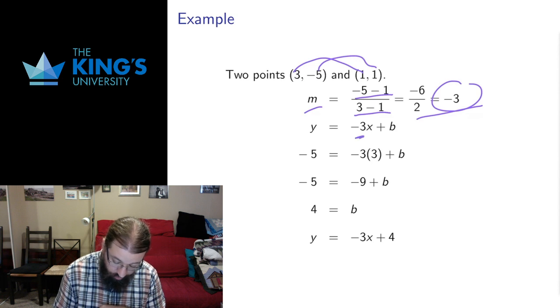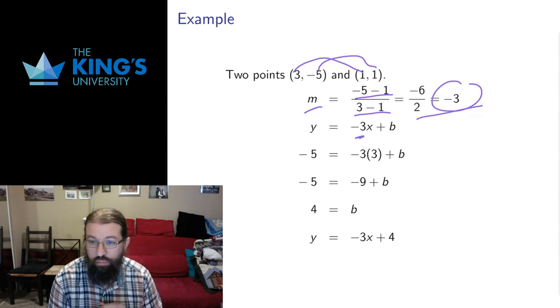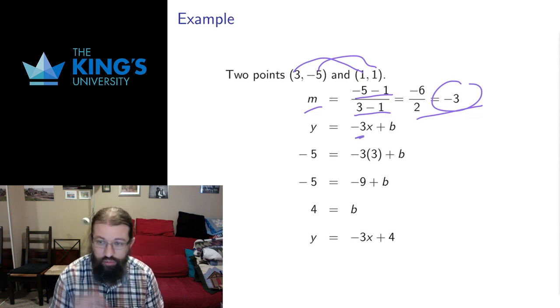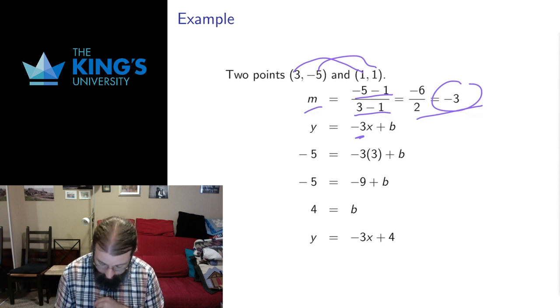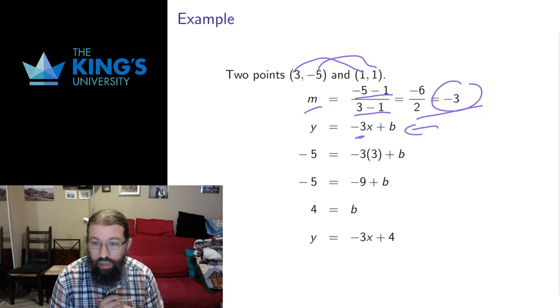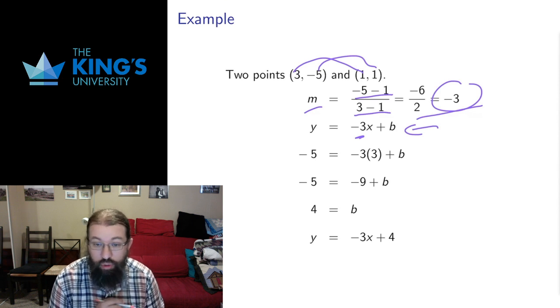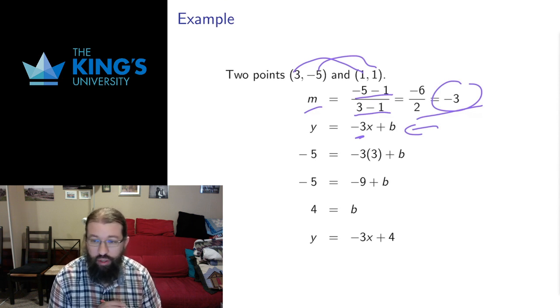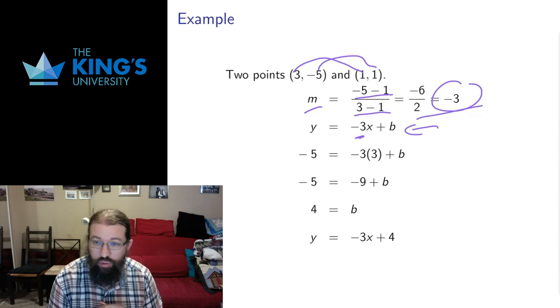Then we put the slope into the slope-intercept form. Slope calculated by rise over run, slope goes into the form, and then again like the previous situation, b is unknown. But we have two points, and either point will work. Both points should satisfy the line, so doing this with either point should be exactly the same and should give you exactly the same intercept.